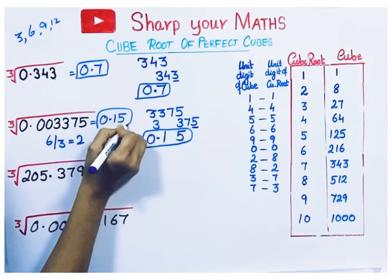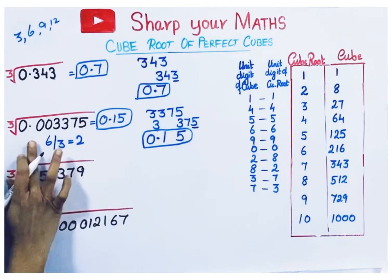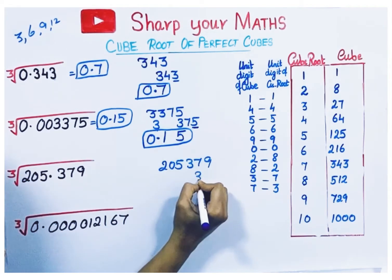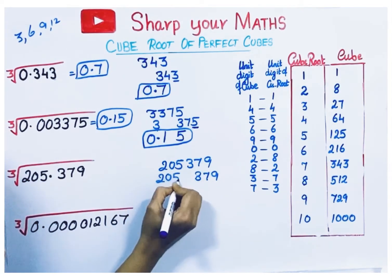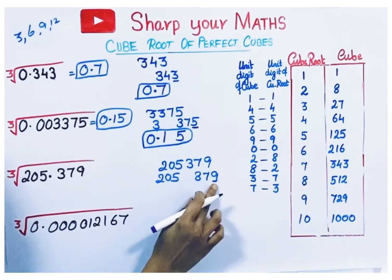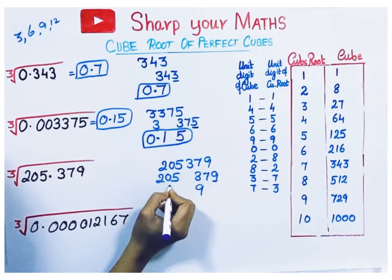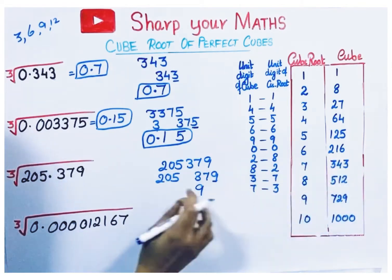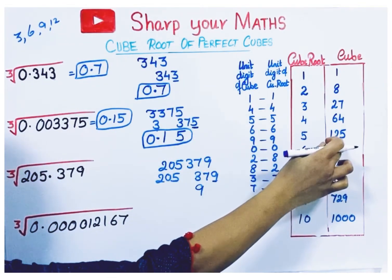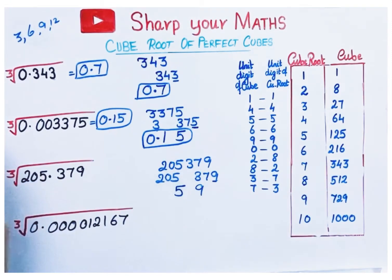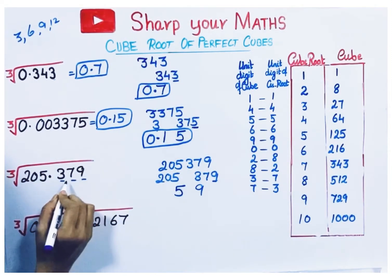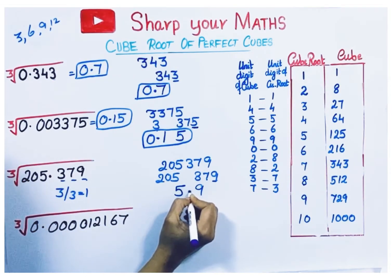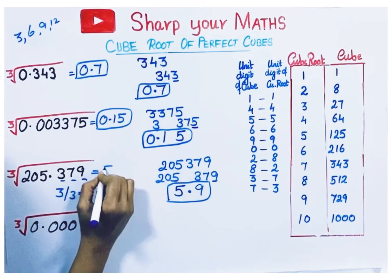Next number: take the number without the point as 205379. Divide into groups — last 3 digits one group, remaining digits another. Check the unit digit: if the cube ends with 9, cube root ends with 9. Take the left group, 205. It is close to 216, but we take the cube less than it — which is 125. Its cube root is 5. The cube has 3 decimal places. 3 divided by 3 is 1, so the cube root has 1 decimal place. The cube root is 5.9.